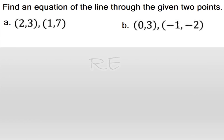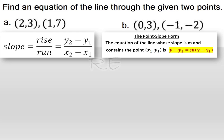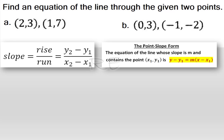Find an equation of the line through the given two points. The slope formula is y2 minus y1 over x2 minus x1. The point-slope formula is y minus y1 equals m times x minus x1.